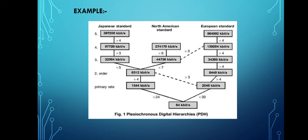In North American standards, the data of 274,176 kbps splits into 44,736 kbps, and again it splits into smaller amounts of 6,312 kbps, and at the last level, it reaches 64 kbps. In European standards, the data of 564,992 kbps is split at the level of 139,264 kbps.